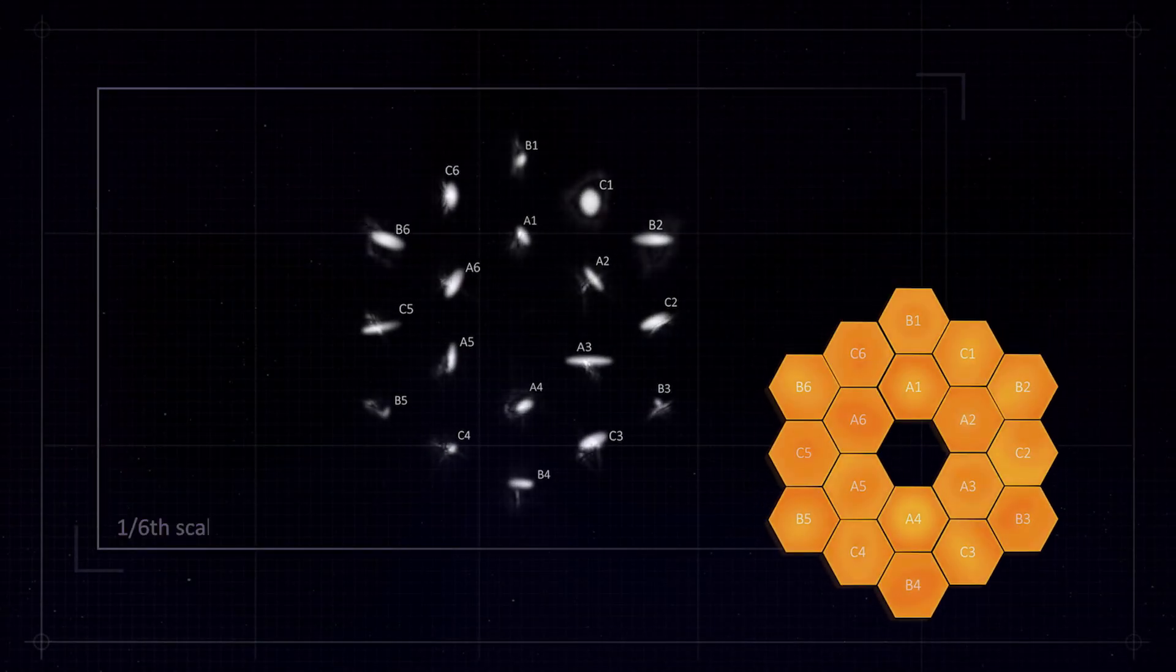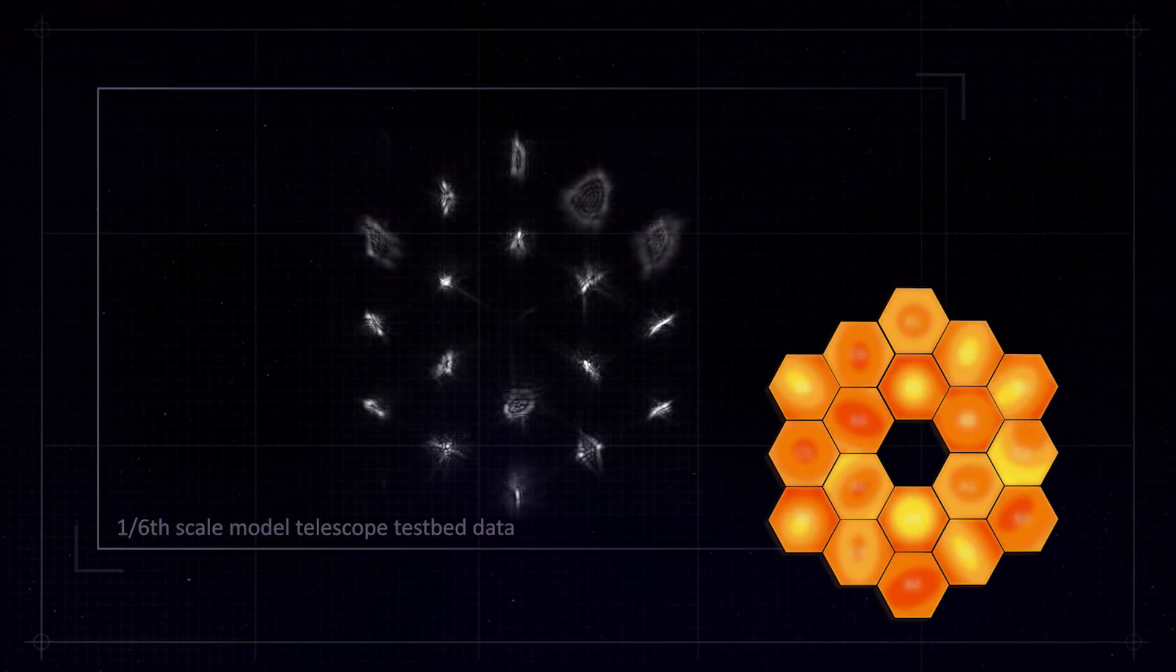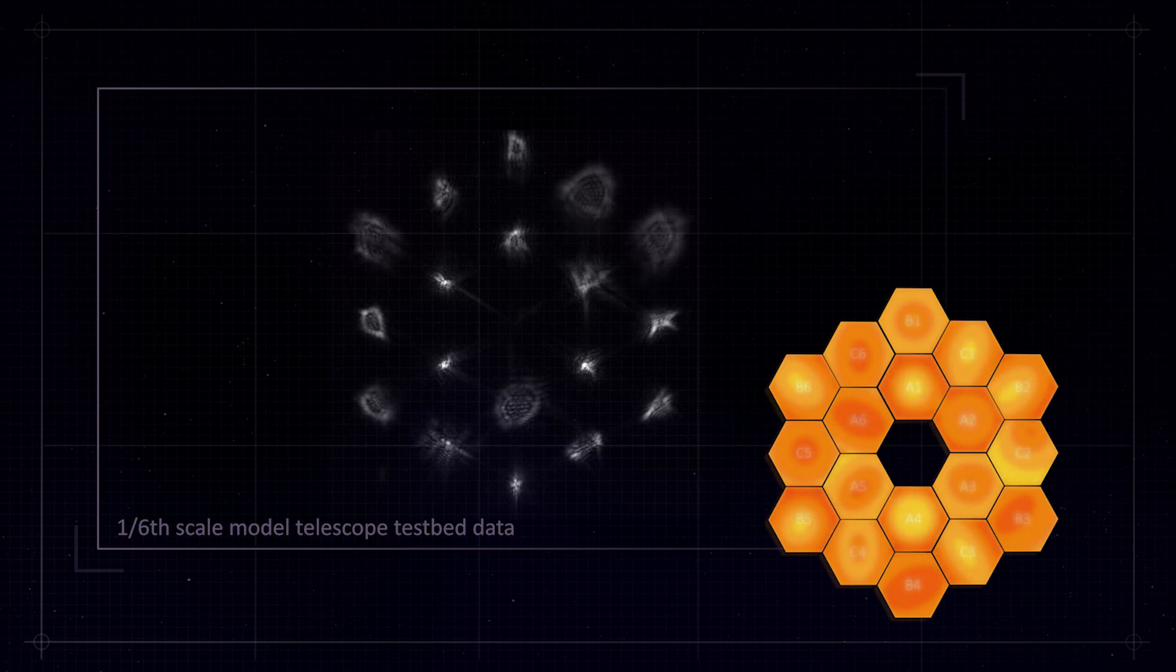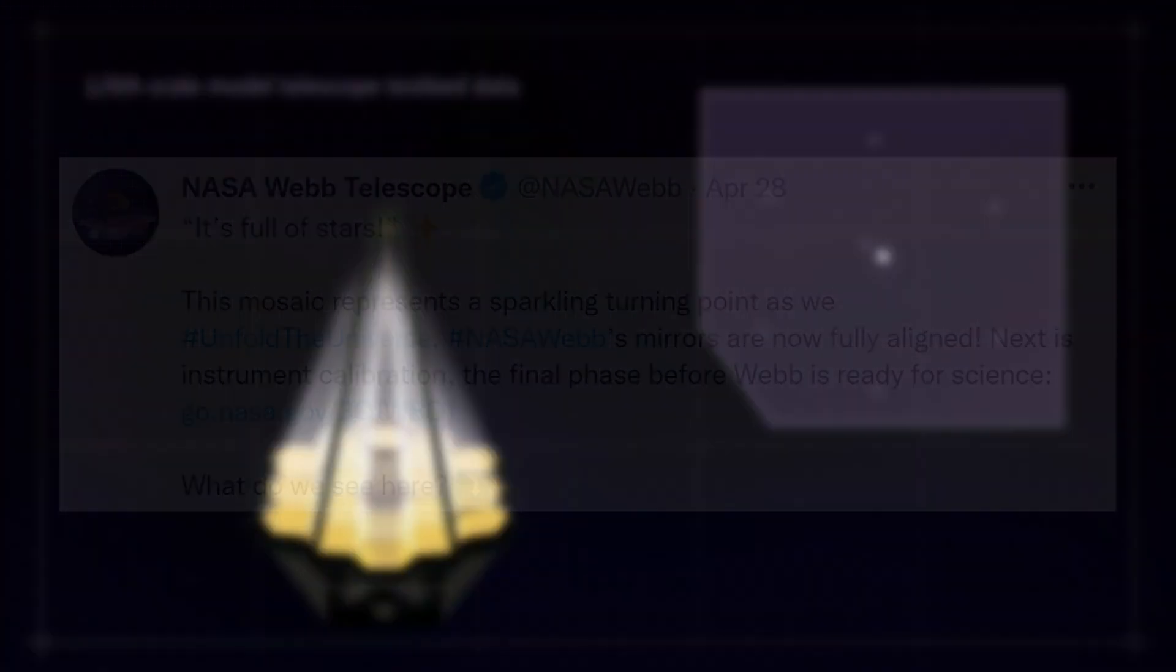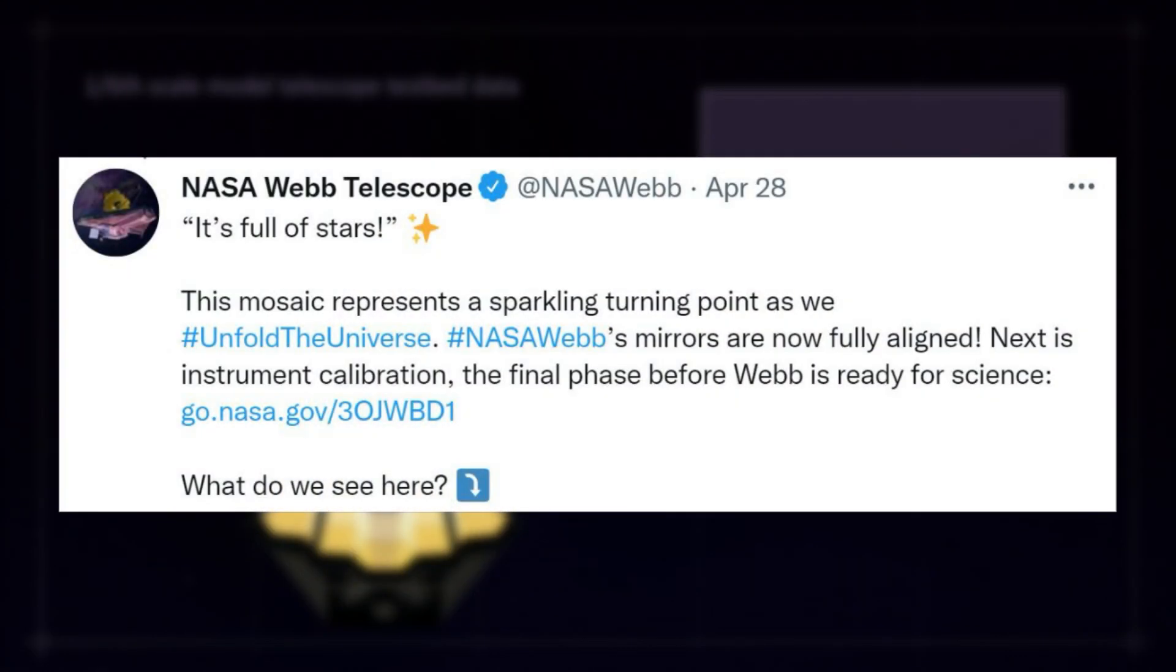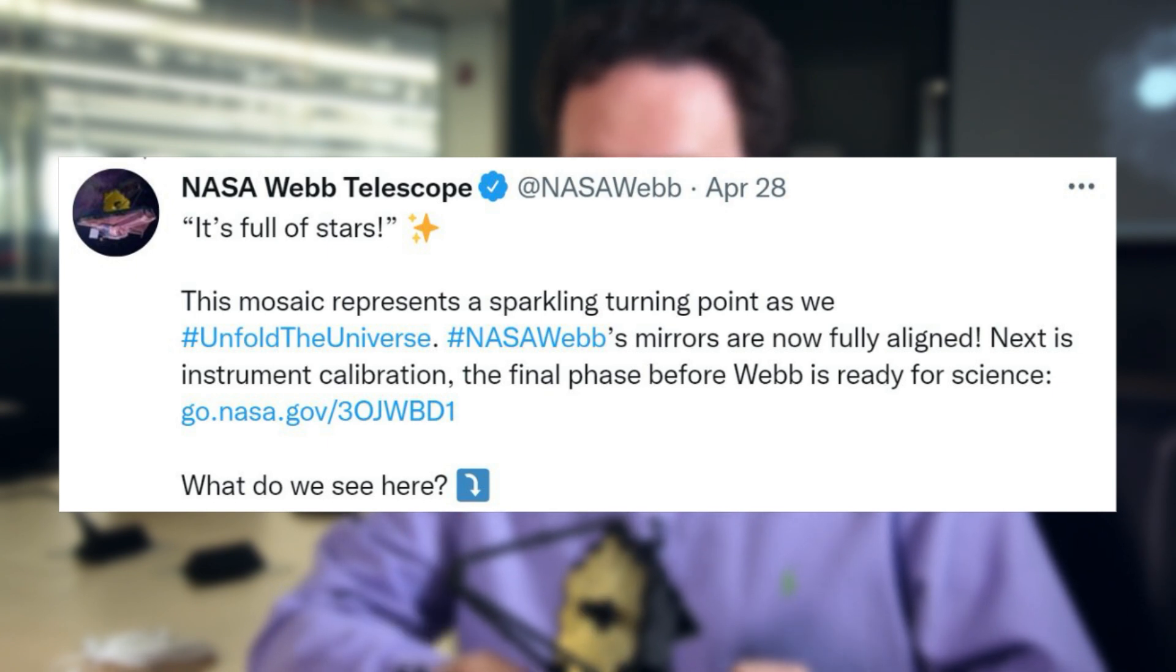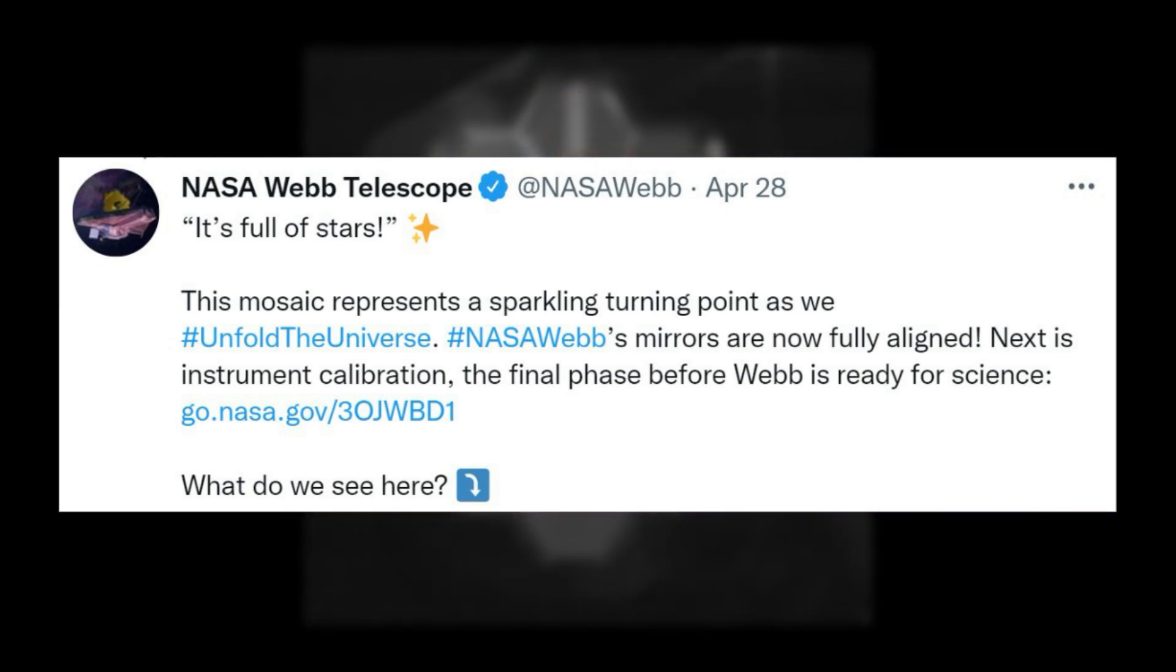If you have been keeping up with Webb's progress over the past few months, you would know the telescope has been getting close to finishing alignment. In late April this became a reality. Specifically, on April 28th, NASA tweeted saying, It's full of stars. This mosaic represents a sparkling turning point as we unfold the universe. NASA Webb's mirrors are now fully aligned.